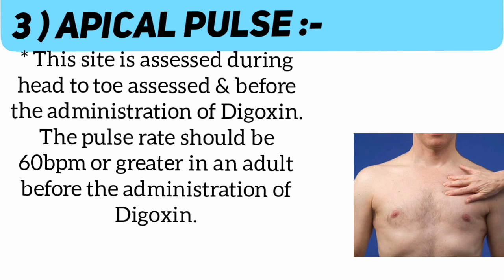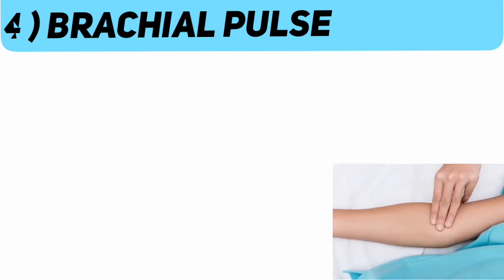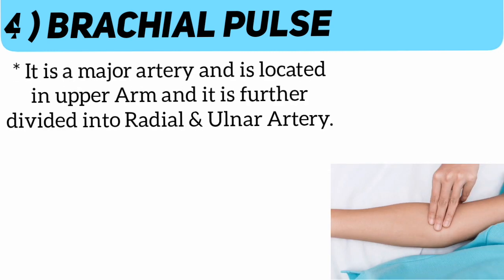Number three: apical pulse. This site is assessed during a head-to-toe assessment and before the administration of digoxin. The pulse rate should be 60 bpm or greater in an adult before the administration of digoxin.